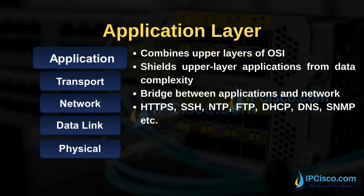The last layer of the TCP/IP model is the application layer. This layer combines the upper layers of the OSI model. In the OSI model, the upper three layers were session, presentation, and application layers. Here, only one layer performs those similar jobs. This layer shields the upper layer applications from the complexities of data. It is a bridge between the network and the applications.